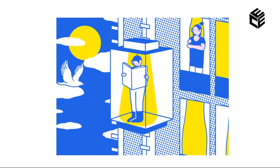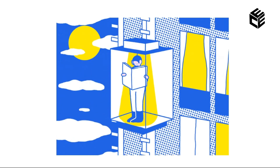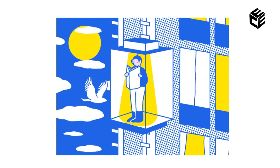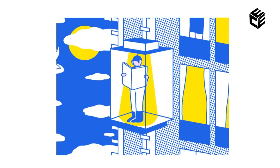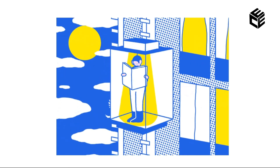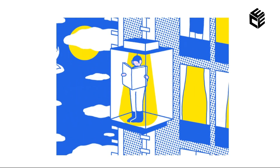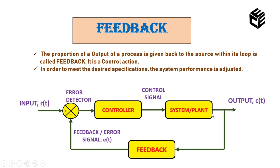Let's see an example related to a lift. Assume I am on the first floor and my destination is the fifth floor. So my input is the first floor and my output must be the fifth floor. The output — fifth floor — is fed back to the input. So 1 minus 5 equals 4, meaning I am on the first floor and need to go four floors forward to reach my destination, the fifth floor.